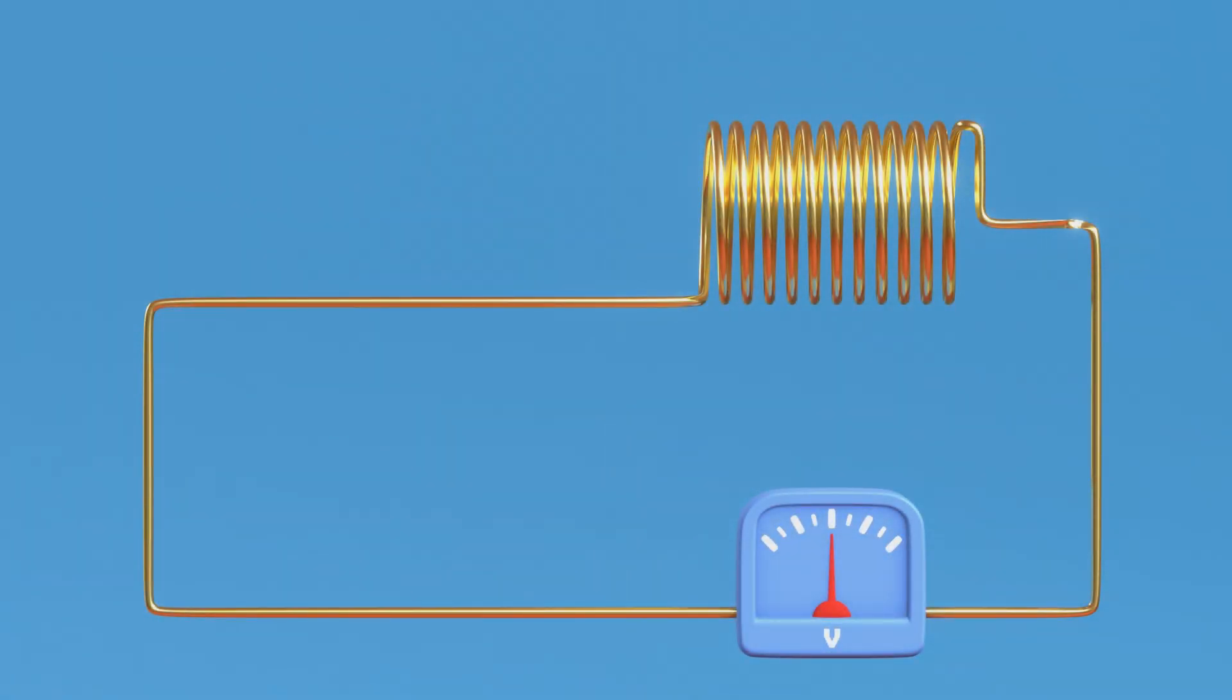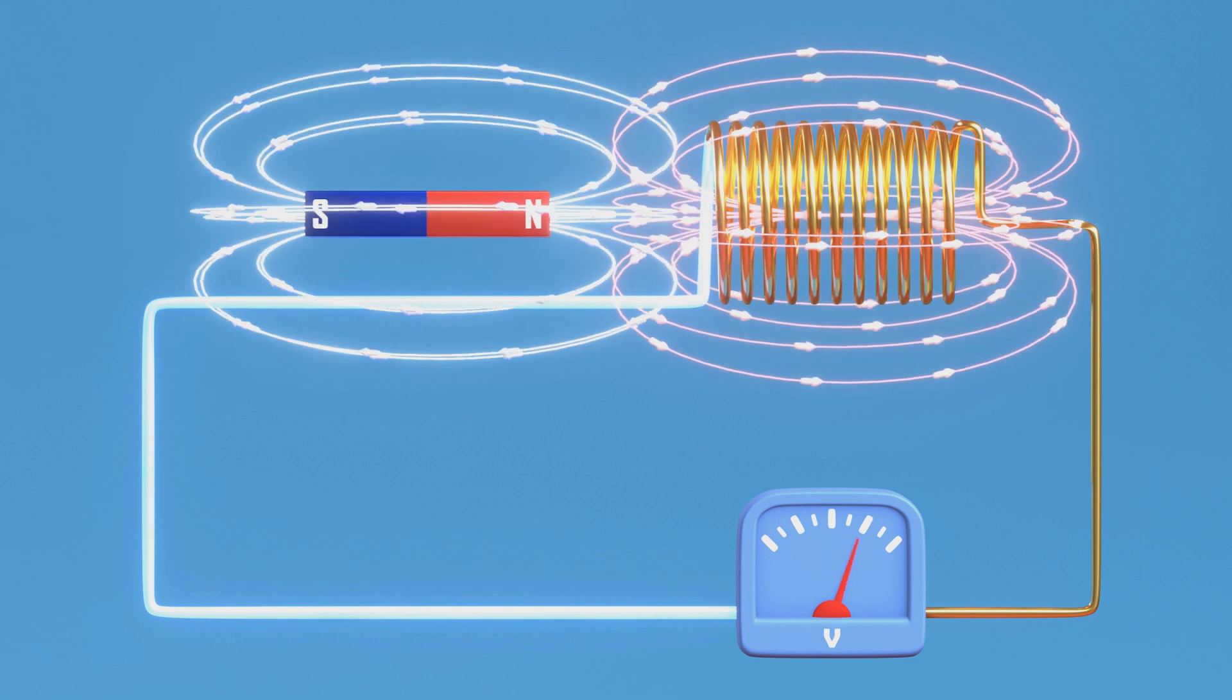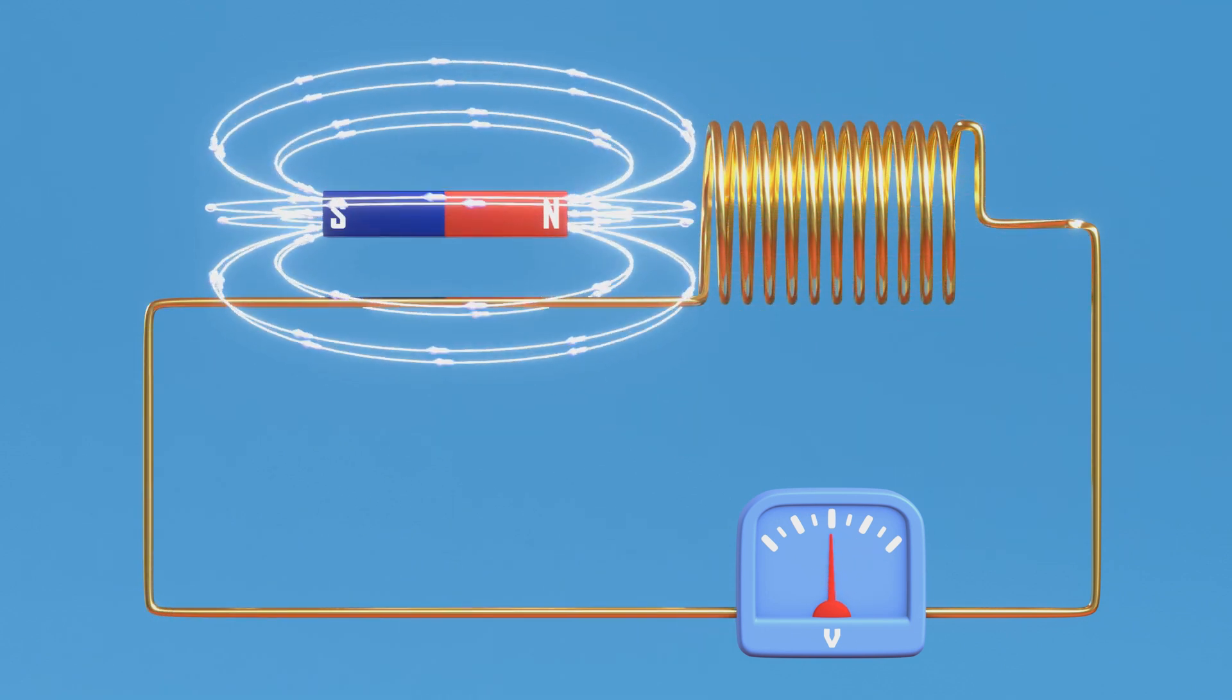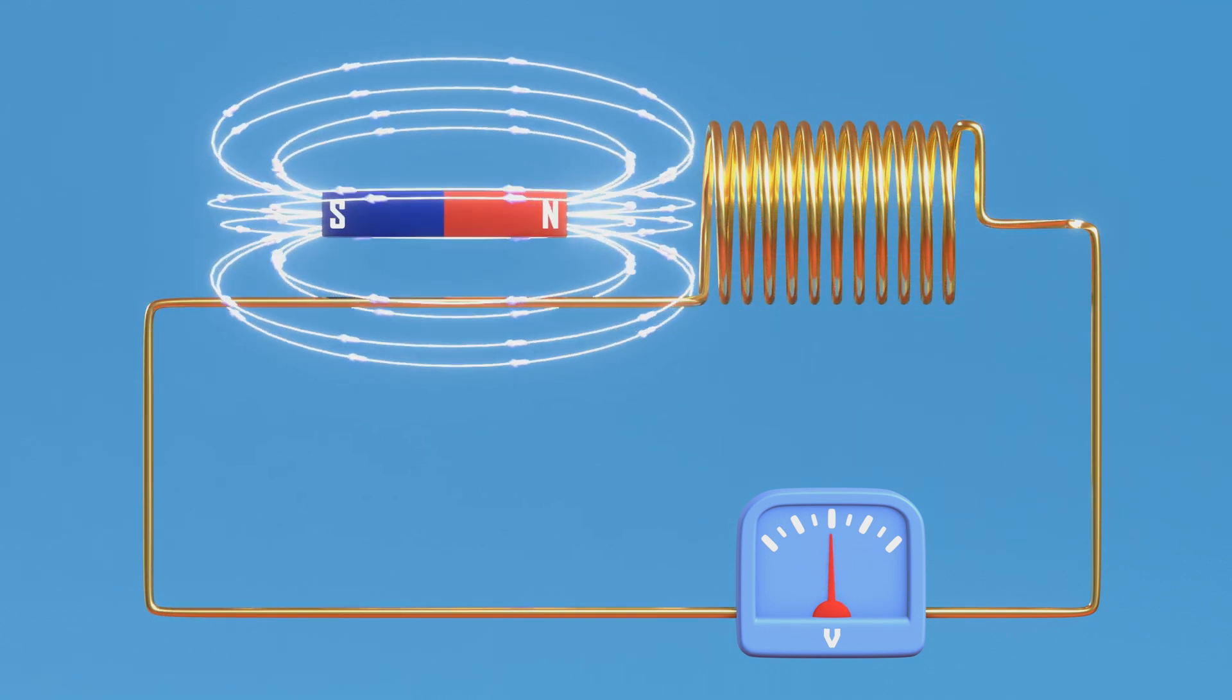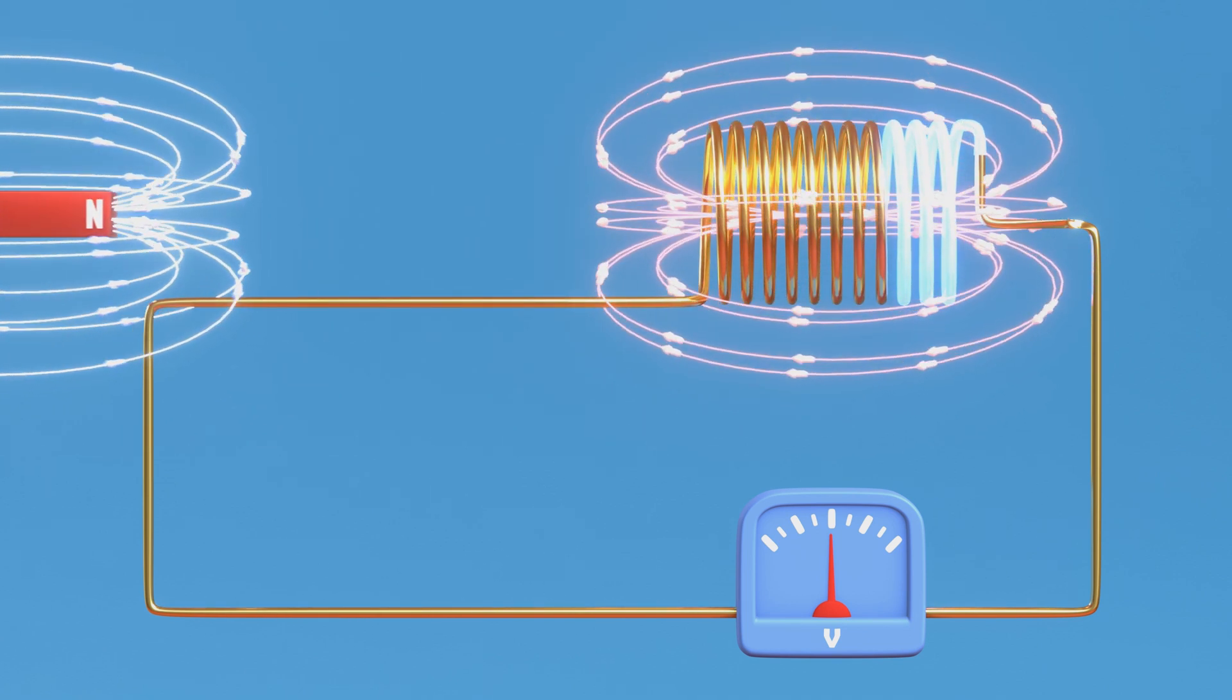When a magnet approaches the coil, changing magnetic flux induces a current, creating a magnetic field opposing the magnet. Similarly, moving the magnet away causes a change in magnetic flux, inducing a current that generates a magnetic field, again opposing the magnet's field.